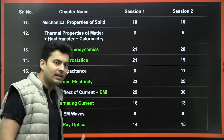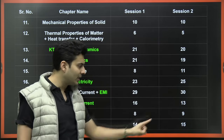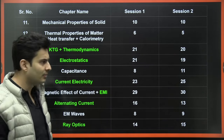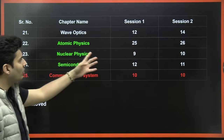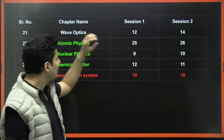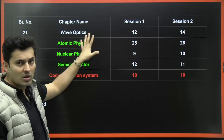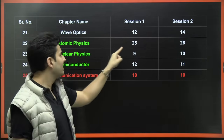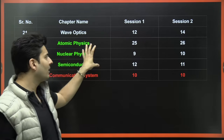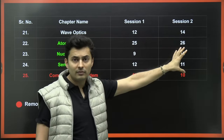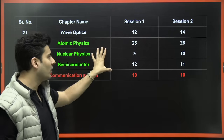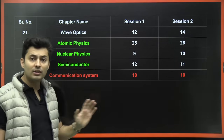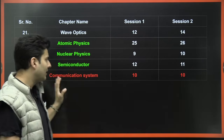Ray optics is decently important — 14 to 15 questions, so expect minimum one and maximum two questions. Wave optics has 12 to 14 questions; understand the chapter well and expect one to two questions. Atomic physics, nuclear physics, and semiconductors — the entire modern physics unit is very very important, with the majority of questions coming from here. Communication systems has been deleted from the syllabus, so don't even bother studying it.